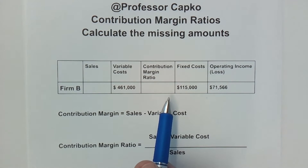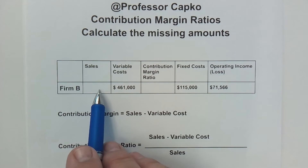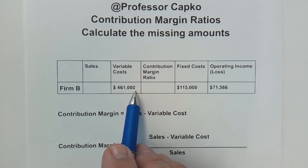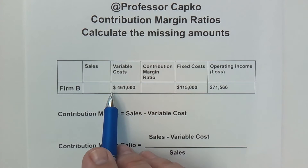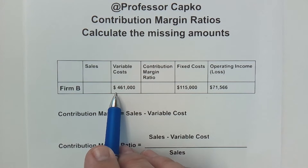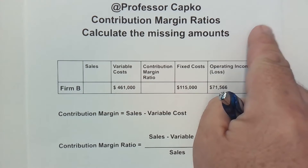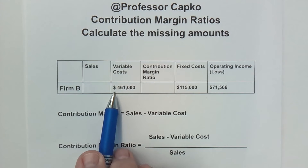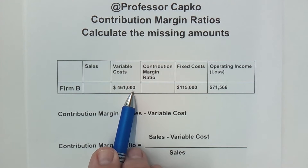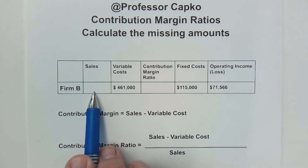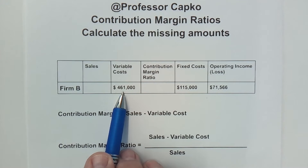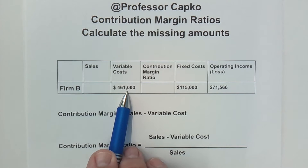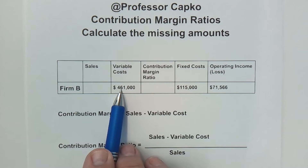Alright, let's take a look at this one. We've got Firm B. We don't have the amount of sales. We do have variable costs — these are aggregate variable costs. In other words, we have variable costs in total, and they vary directly with sales. So if sales go up, the variable costs will go up, and likewise as sales go down the variable costs would go down. That's why it's a variable cost.